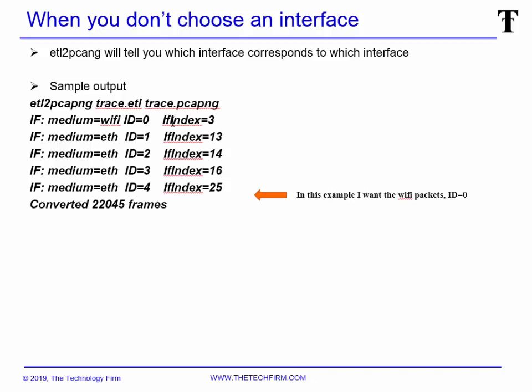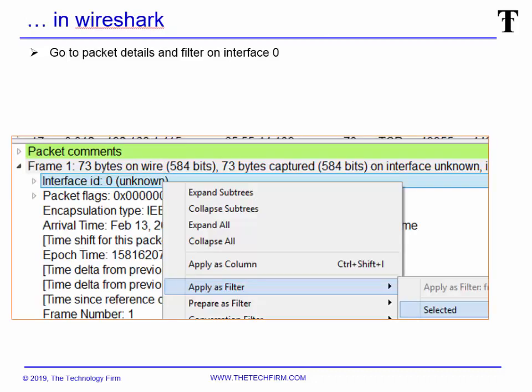This is sometimes actually what you want — you want a machine that has Wi-Fi and ethernet and you want to capture from everything in one shot. When you go to Wireshark and look at your frame header and right-click on interface ID, you'll see it says zero — that's the Wi-Fi data. Right-click, apply as filter, selected, and you'll see just the Wi-Fi packets. So you can capture natively in Windows using netsh trace, then use the free ETL2pcapng utility to convert it to a pcapng file. In those situations where you can't install Wireshark or anything on a machine, give this a go — it might help you out. Have a good day, bye for now.